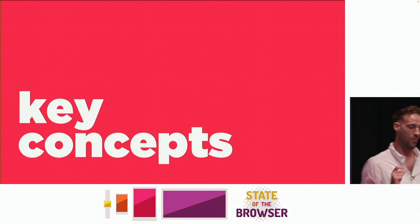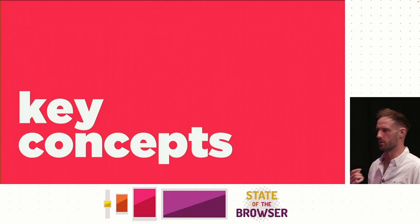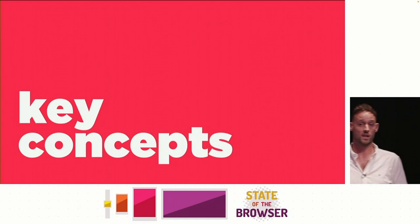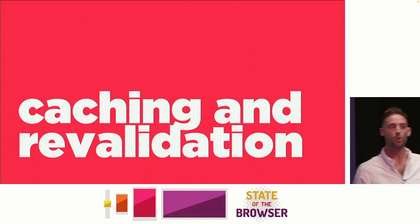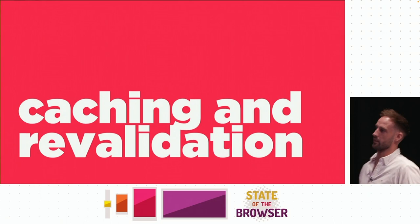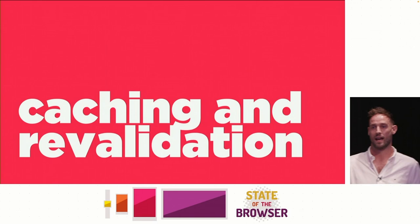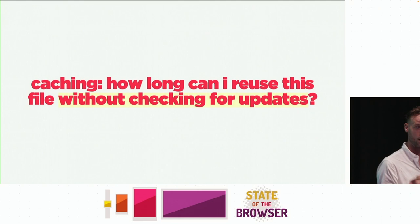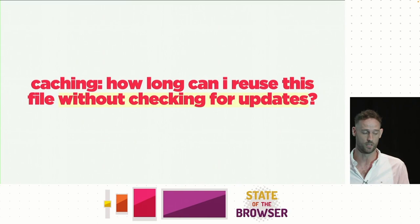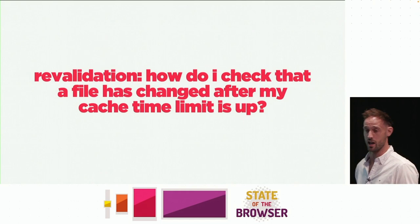Before we dive too deeply, I want to go through some key concepts. I want to make sure we've got a shared understanding of what we're about to discuss. The first concept is caching, and its sister topic: revalidation. These are the two things you need to solve. How do we cache a file and how do we find out if we need to update that file afterwards? Caching is simply: how long can I reuse this response without checking for updates?